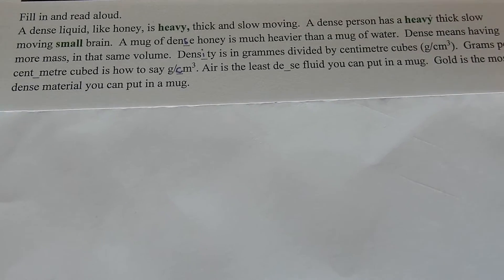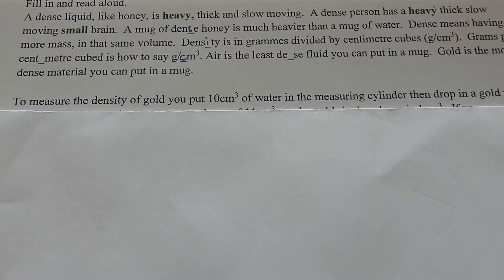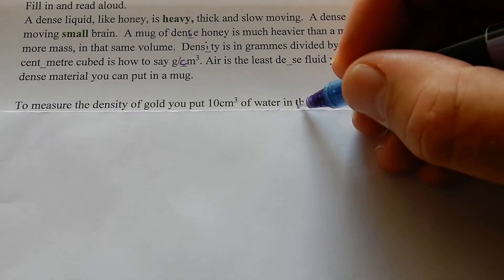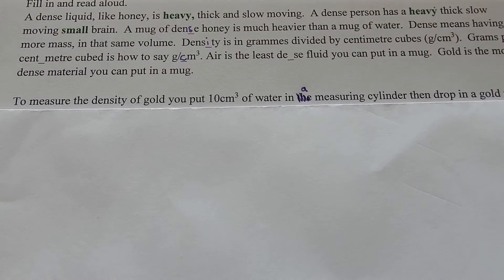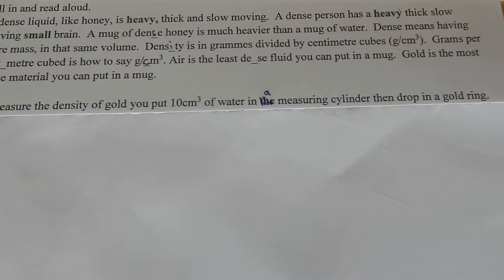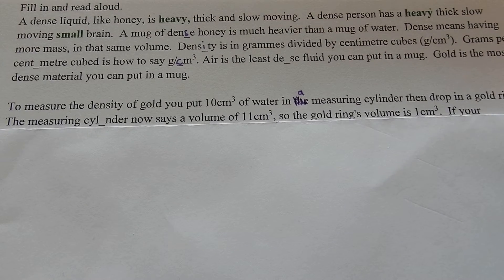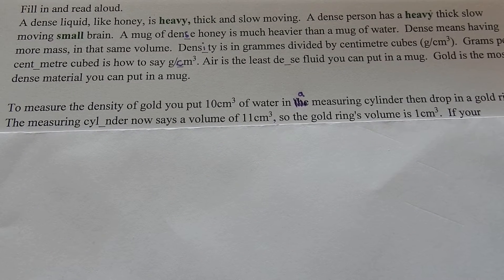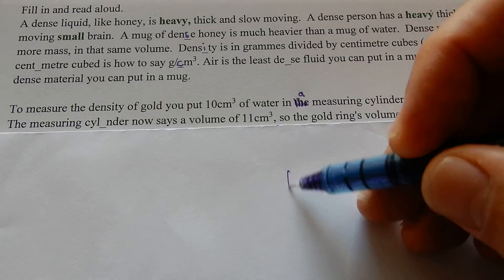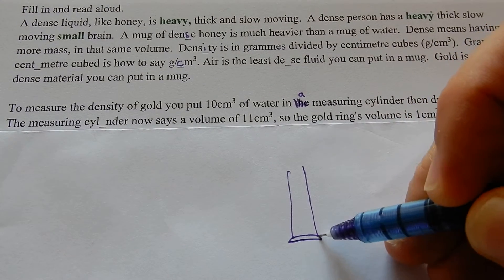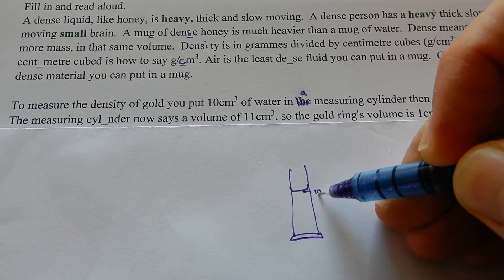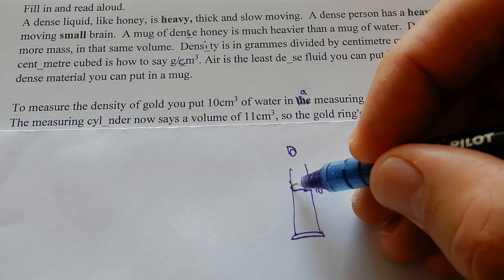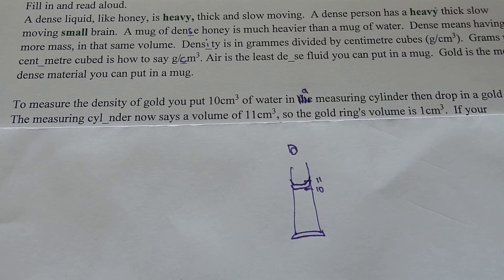To measure the density of gold, you put 10 centimeters cubed of water in a measuring cylinder, then drop in a gold ring. The measuring cylinder now says 11 centimeters cubed, so the gold ring's volume was 1 centimeter cubed. You put water in up to 10, add the gold ring, and now it says 11 — the water goes up because the ring's volume displaces it.